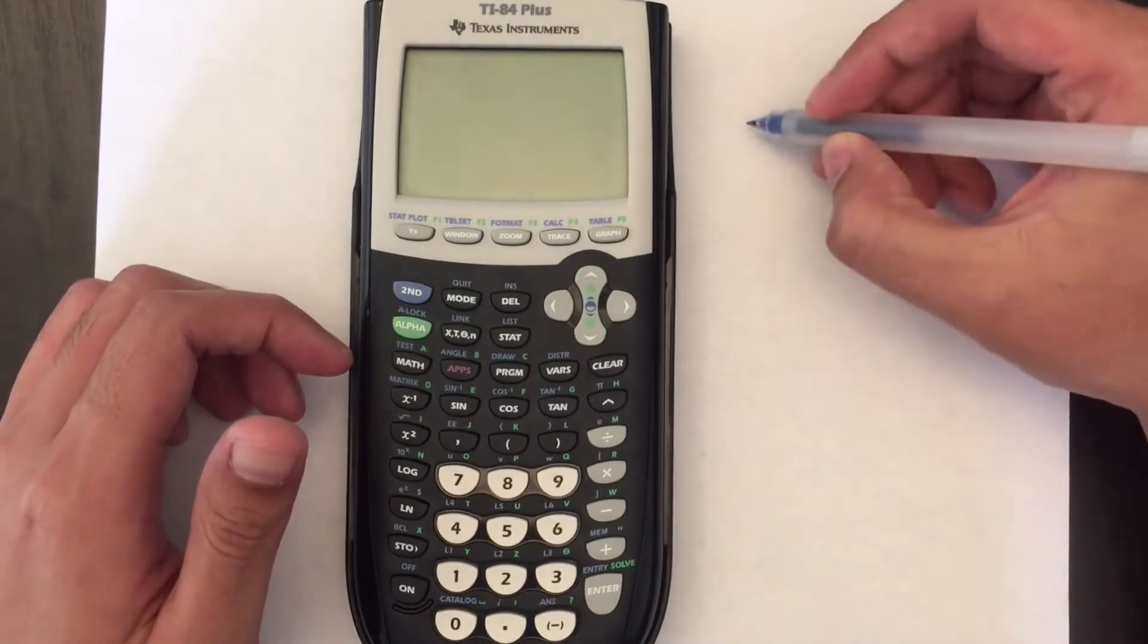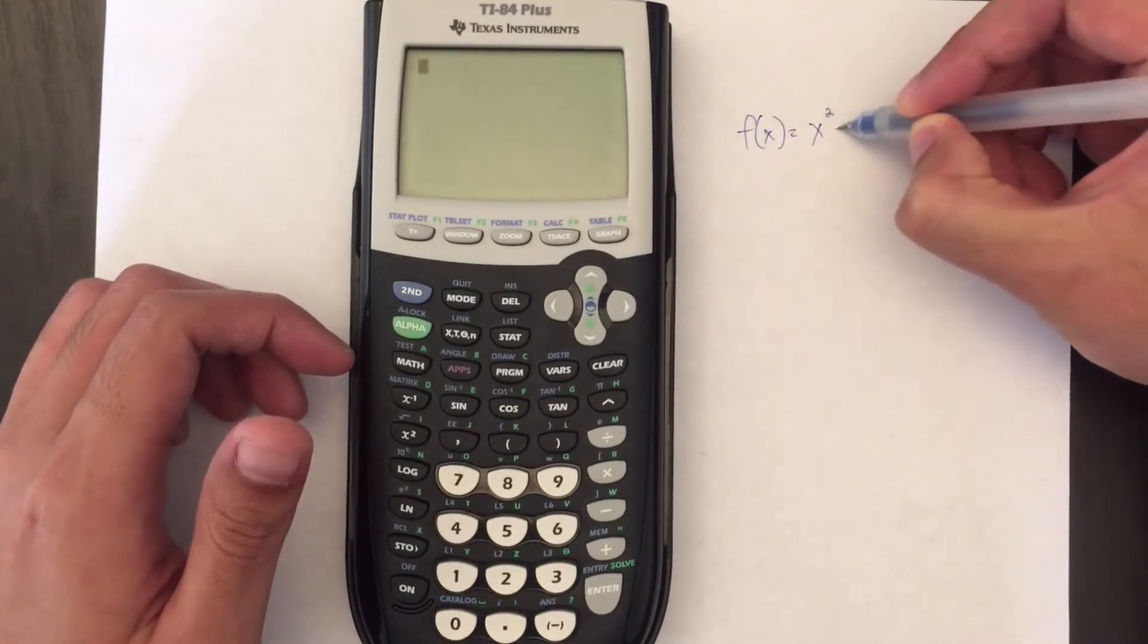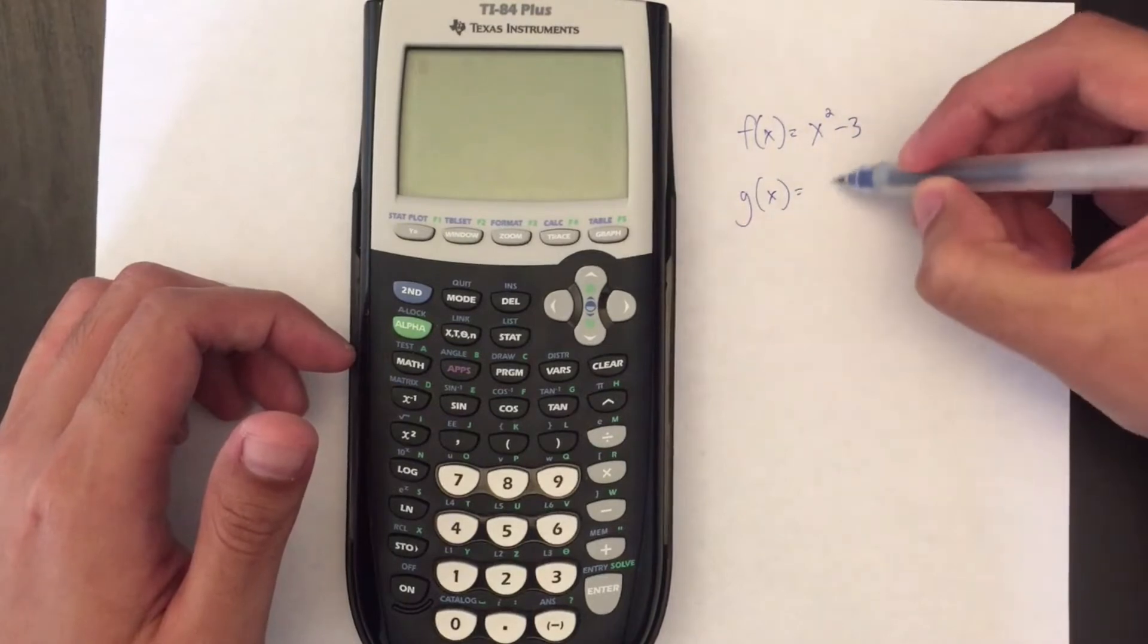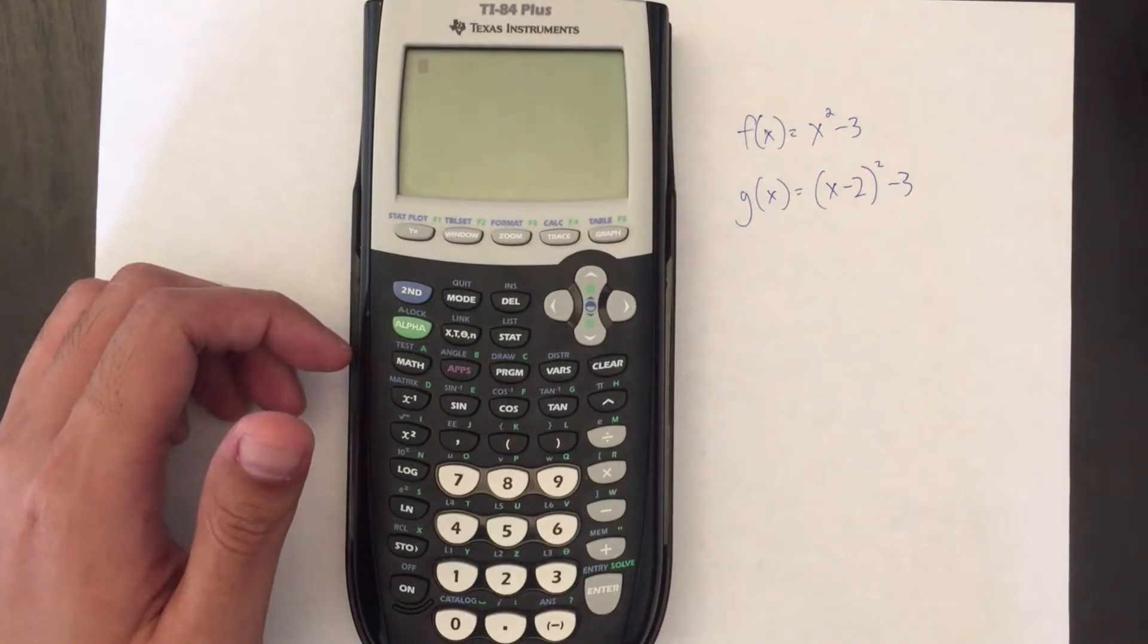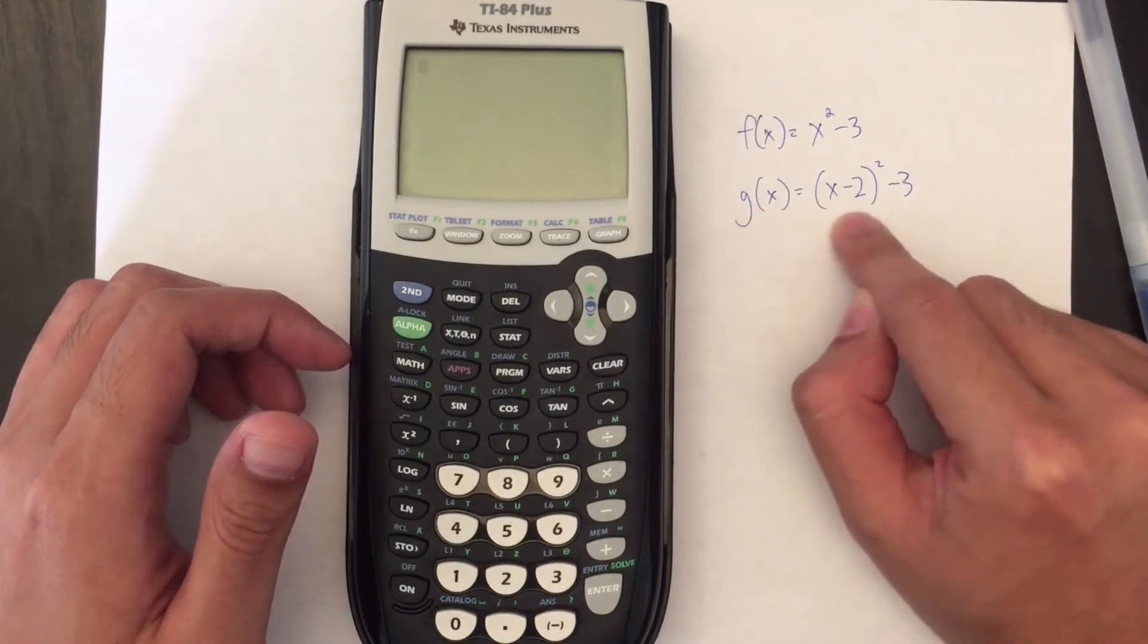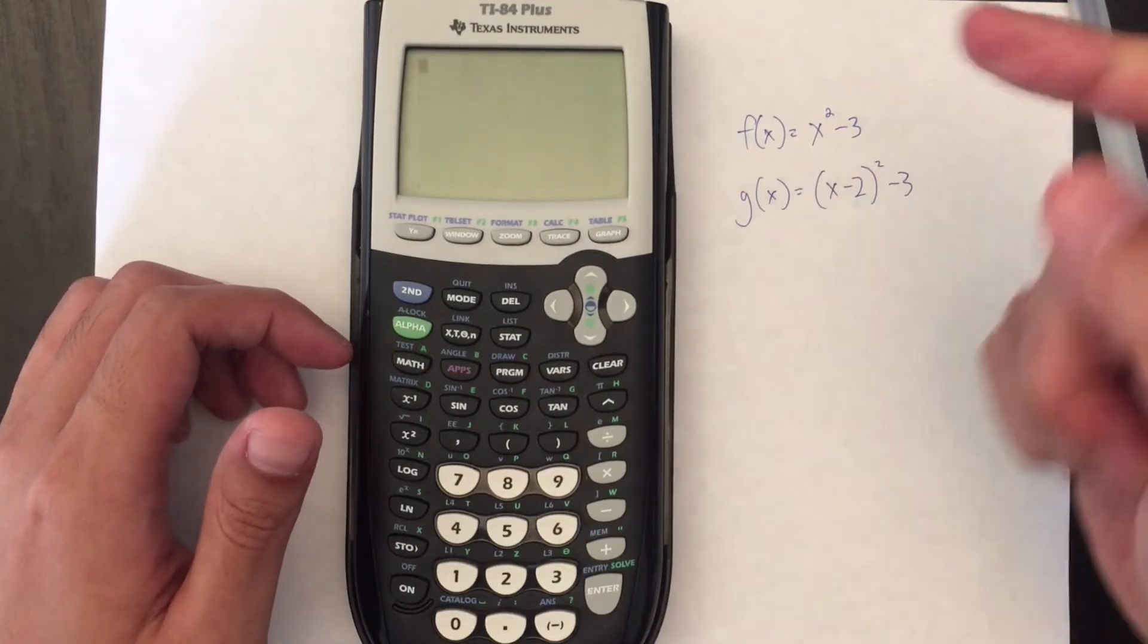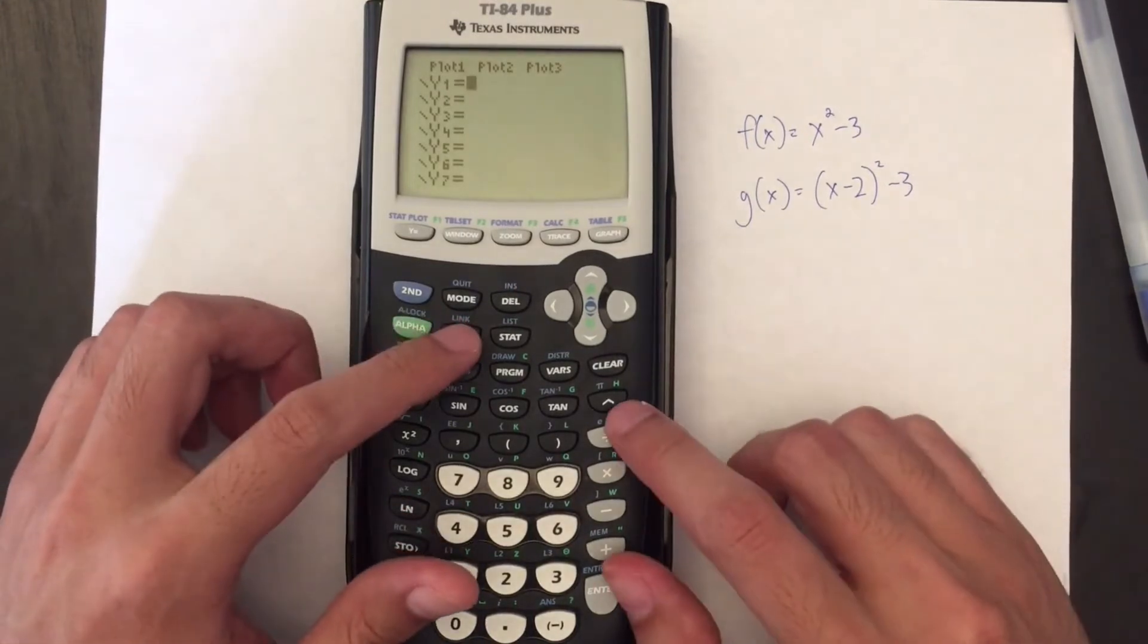So let's imagine that we have a function f(x) = x² - 3 and g(x) which is (x - 2)² - 3. And as you may know from math class, this function here is actually translated two units to the right of f(x). But if you didn't know that and the SAT might ask you this, what you can do is simply just plot the two.